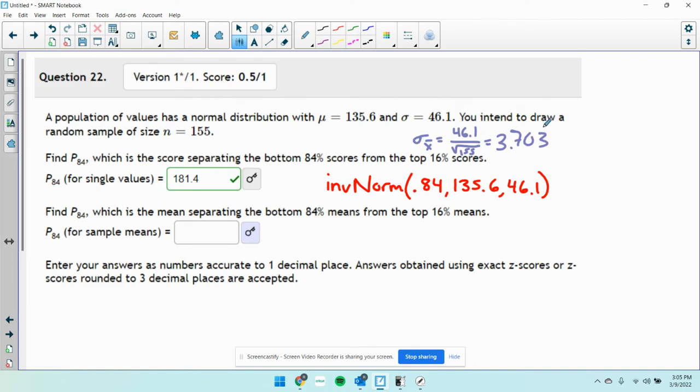We'll do the same thing here, except we're going to change our standard deviation. Area is still 0.84, mean is 135.6, but our standard deviation is 3.703.